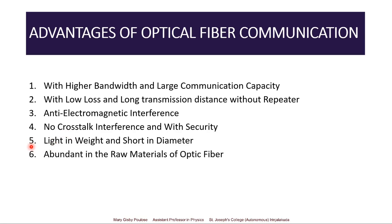These cables are light in weight and short in diameter, making them very useful for saving space in cable ducts. The raw materials for optical fibers are abundant in nature — glass and silica are very much abundant in the form of sand. The only disadvantage is that the process involved in converting silica to glass is highly expensive, so manufacturing technology needs to be further developed to improve its efficiency.